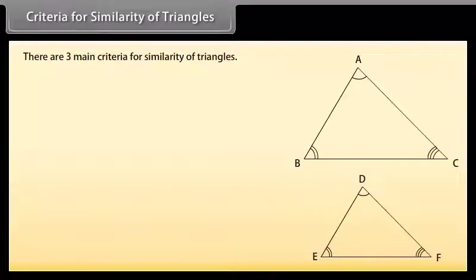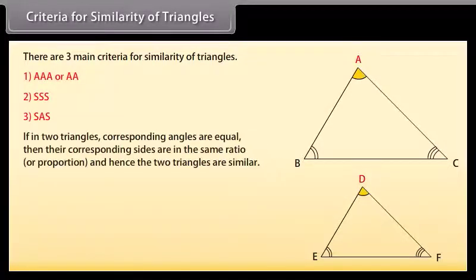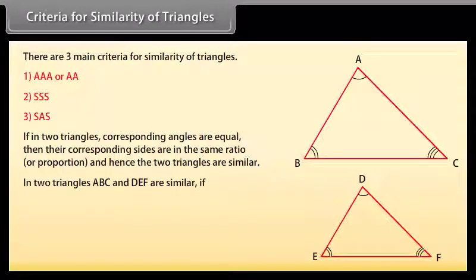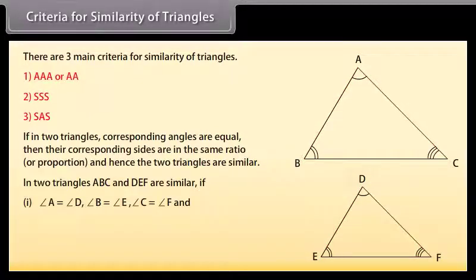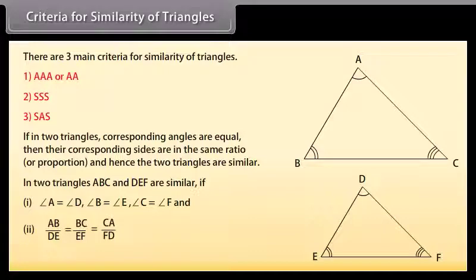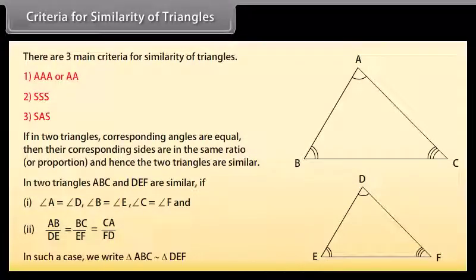Criteria for similarity of triangles. There are three main criteria: 1) AAA or AA, 2) SSS, 3) SAS. If in two triangles the corresponding angles are equal, then their corresponding sides are proportional and hence the triangles are similar. In two triangles ABC and DEF are similar if: angle A equals angle D, angle B equals angle E, angle C equals angle F; and AB upon DE equals BC upon EF equals CA upon FD. In such a case we write triangle ABC is similar to triangle DEF.